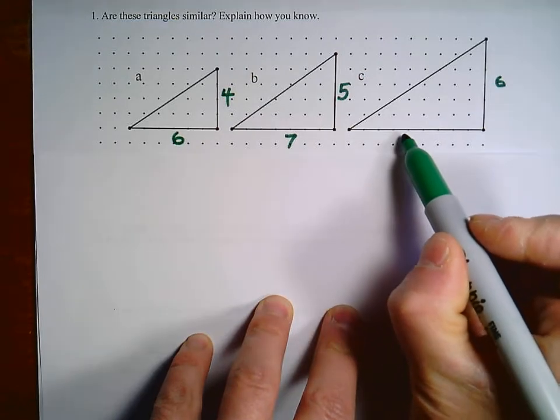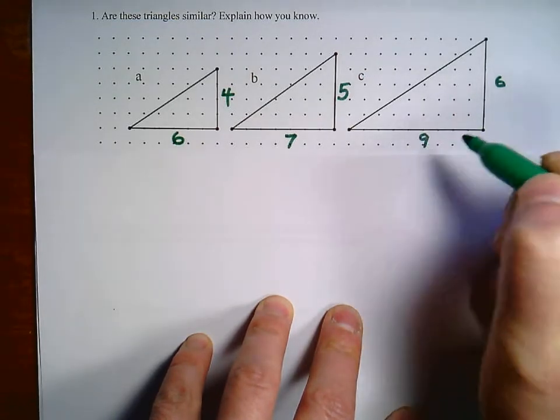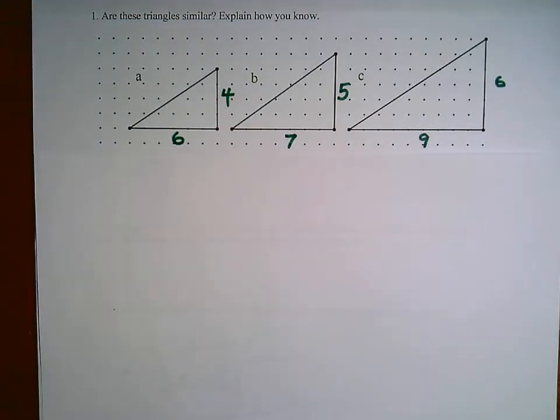And let's check. So this is definitely going to be a six. And I will have to count one, two, three, four, five, six, seven, eight, nine. So we are counting the actual line segments between the pegs.